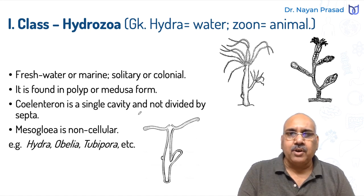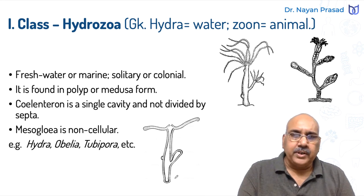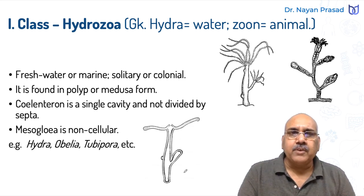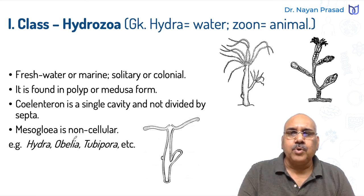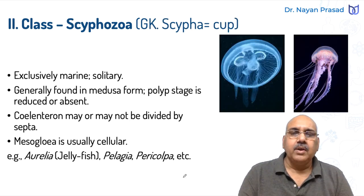The coelenteron is a single cavity and not divided by septa. As we can see in this diagram of hydra, the body bears a central cavity called coelenteron, and this cavity is single, not divided into different chambers. Mesoglia is non-cellular — in these diploblastic organisms, the outer ectoderm and inner endoderm are attached by a non-cellular layer called mesoglia. Examples are Hydra, Obelia, and Tubipora.